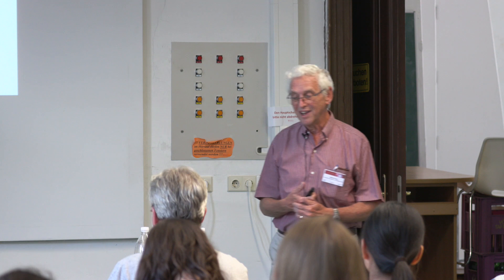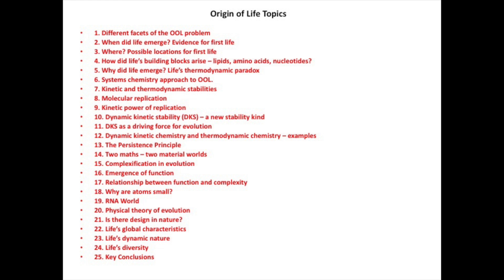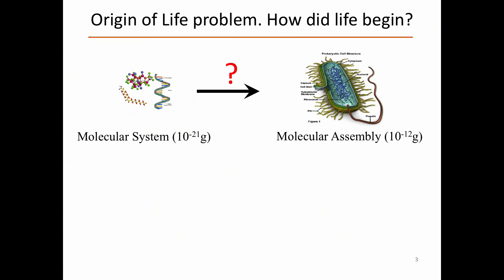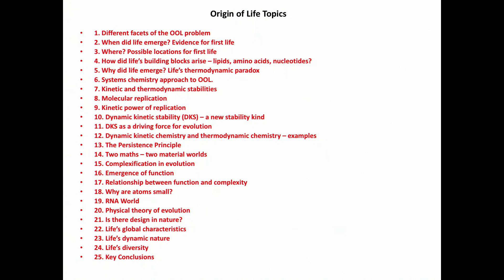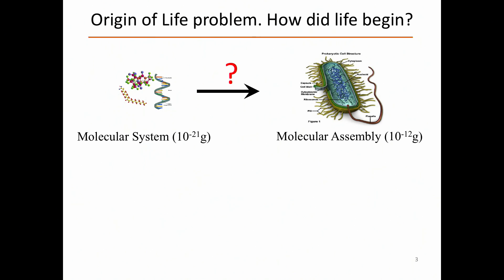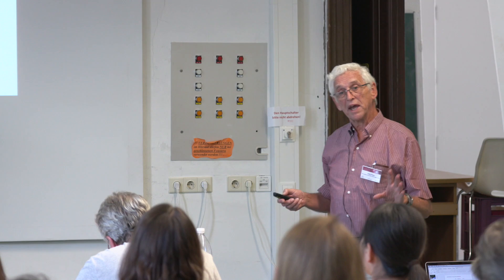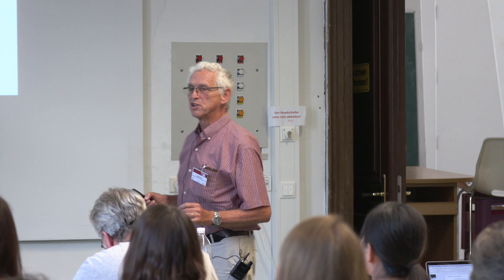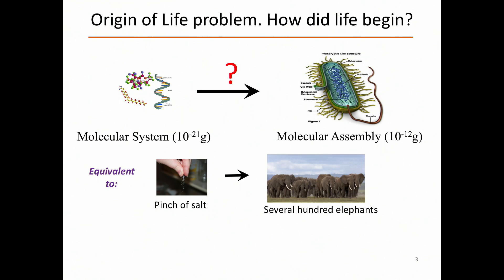These are the topics I want to cover. And there is the question posed directly: how did a molecular system of some kind of molecular weight — something like 10 to the minus 21 grams — become an assembly of 10 to the minus 12 grams? Now that's nine orders of magnitude — equivalent to a pinch of salt being transformed into a herd of several hundred elephants. How did that process of complexification come about? We don't know.